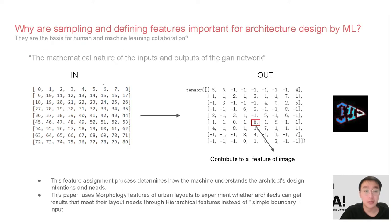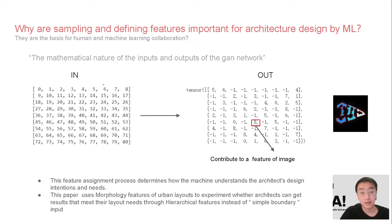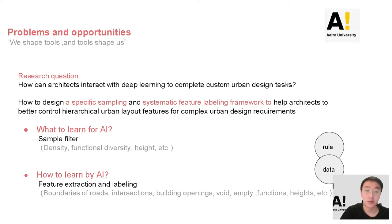Let's focus on the input and output of the GAN. The machine will not understand the image, not even the architecture design. They understand the probability of the distribution of numbers behind the image — the numbers represent certain features. This feature assignment process determines how the machine understands the design intentions and needs of the architect. How can architects interact with deep learning to complete a customized urban design task?